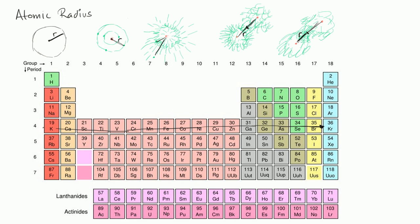When you're at potassium, you have 19 protons and 19 electrons, but only one electron in that outermost fourth shell. There's a Coulomb force attracting that electron, keeping it in place.